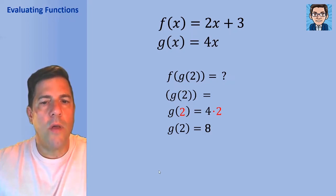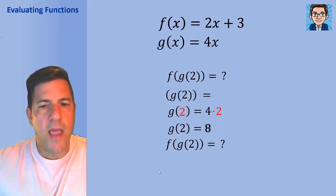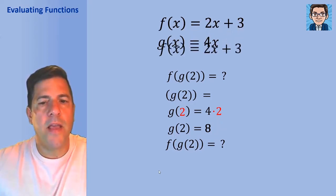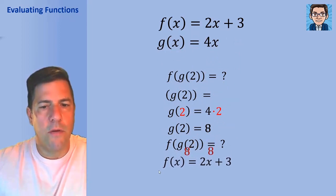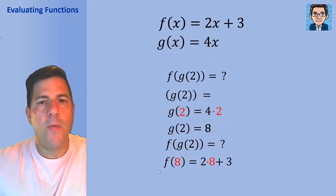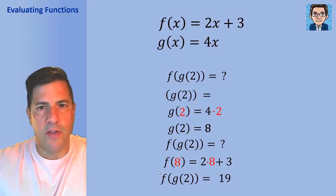Now that we've calculated that g of 2 equals 8, we can put 8 into the f function. So f of g of 2 becomes f of 8, which is 2 times 8 plus 3. That's 16 plus 3, which gets us 19. That's how we do a composite function.